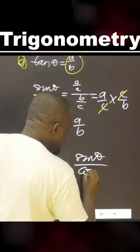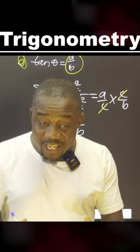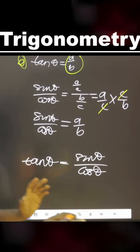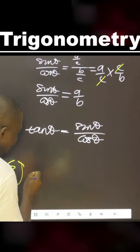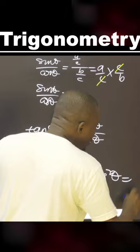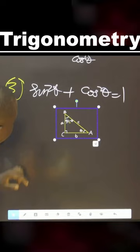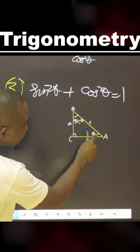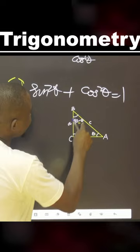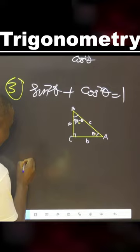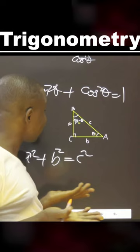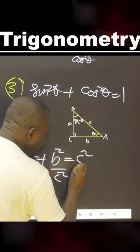These are very important. When you are faced with questions, you need to understand all these. There is another thing we need to prove: the third identity is sine squared theta plus cos squared theta equals 1. We need to prove this. Using Pythagoras' theorem, we can say A squared plus B squared equals C squared.